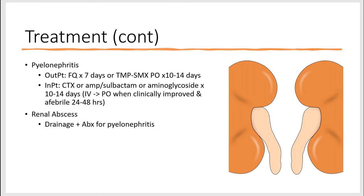If you're suspicious for pyelonephritis and the patient is in an outpatient setting, we give them a fluoroquinolone — Cipro for seven days, or Bactrim for 10 to 14 days, depending on how sick they are. If treating inpatient, we treat them with ceftriaxone, or ampicillin-sulbactam, or rarely with an aminoglycoside for 10 to 14 days. Usually these are IV formulations, and we would transition them to oral when they are clinically improved and have not had fevers for 48 hours.